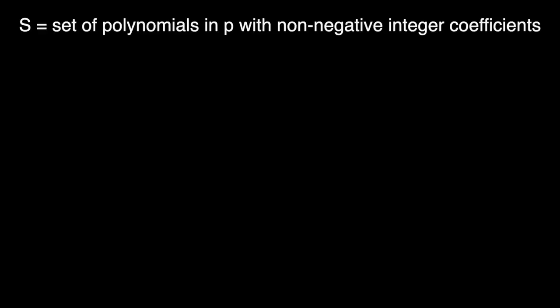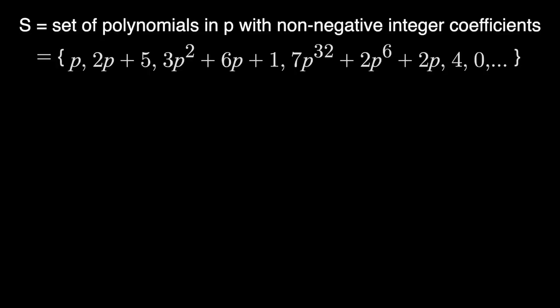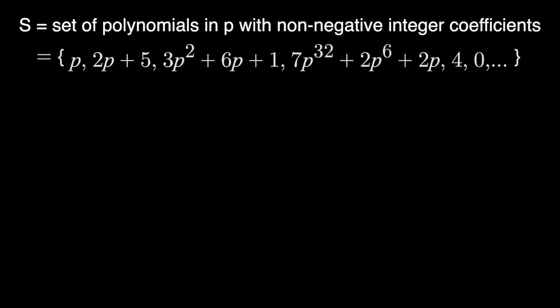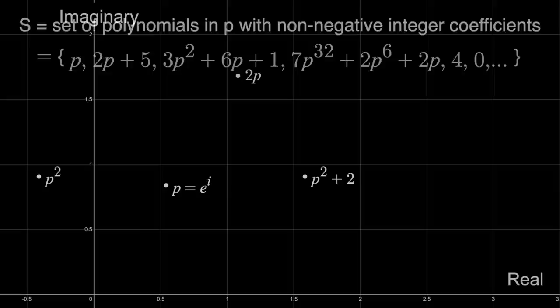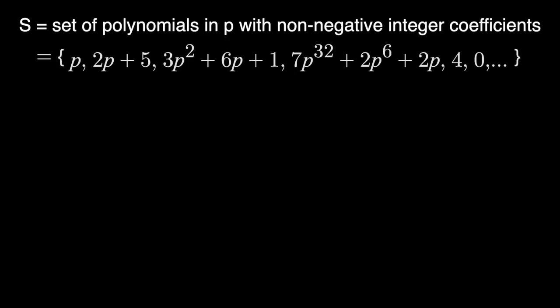Now, we're going to let S, our subset of the plane, be the set of all polynomials in P with non-negative integer coefficients. All polynomials in P just means all polynomials where you have P instead of a variable X. So S would include P, and 2P plus 5, and 3P squared plus 6P plus 1, other crazy looking polynomials, and even non-negative constants like 4, 0, and so on. Just a bunch of polynomials using P instead of X, which means all of these elements of S are just points, because P is still just e to the i. There's an infinite number of these points scattered throughout the plane. But this is why this is not really a visual problem, because the subset of the plane we're choosing is an infinite set of very scattered points, not a nice visual shape or anything like that.